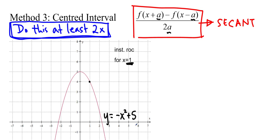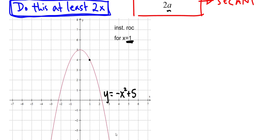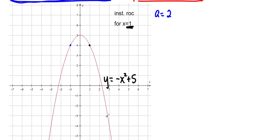We've got y equals negative x squared plus 5, and I'm going to choose a couple of different intervals. We always want to start with a bigger one and then go smaller and smaller. I think I'm going to start with a equals 2, so that's 2 away from 1. One is our actual point that we're trying to find, the x, so it's going from here and then 2 away in the x values.